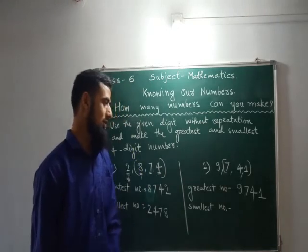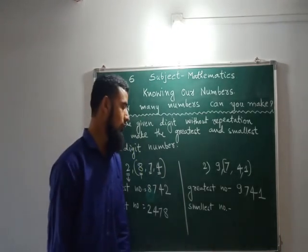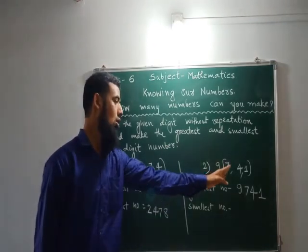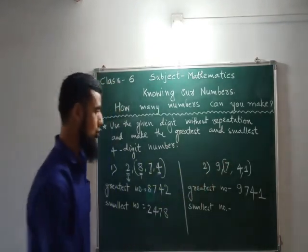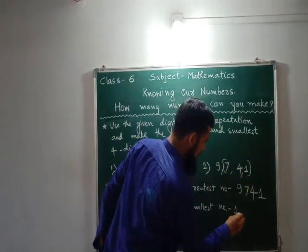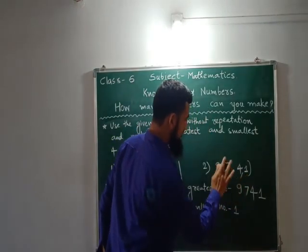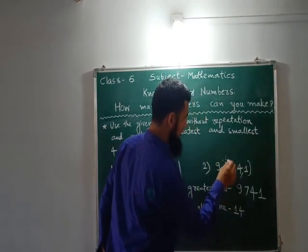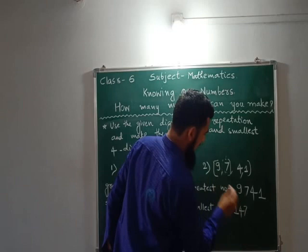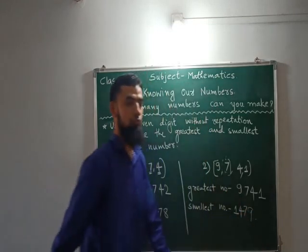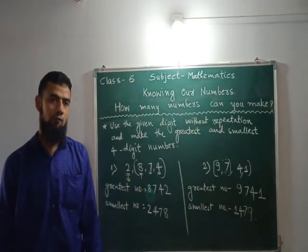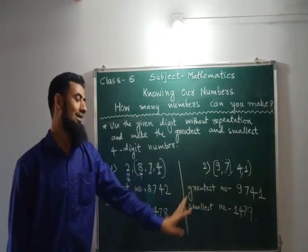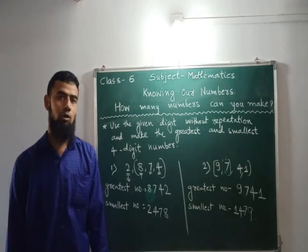Shall we find the smallest number? What we have to do first? We will find the smallest digit among all. So, first smallest number is 1. Then the second smallest is 4. Then 7 and 9. In this way we can very easily find the greatest number and smallest number.